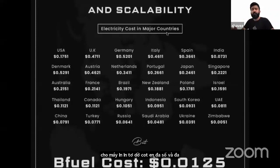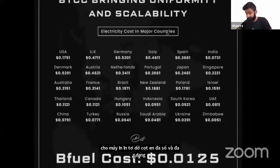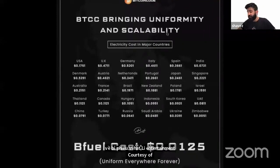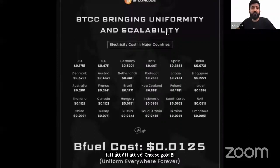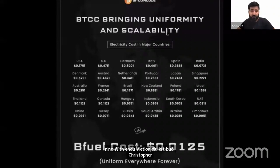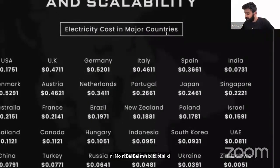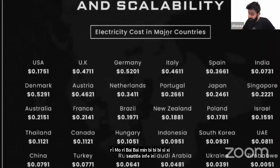With BFuel, we have created a uniform cost that is attached to an asset, which is going to become a use case, which is going to create a secondary market. You are going to create the secondary market by mining BTCC. In India it is $0.07, which is smaller than in the US.